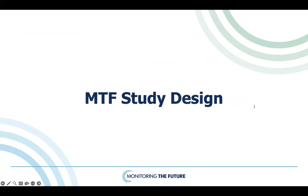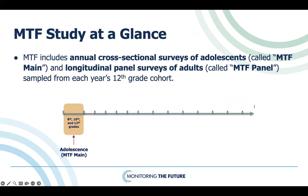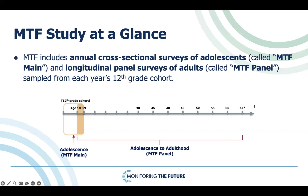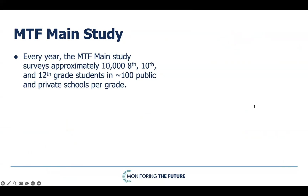Let's look closely at the MTF study design. MTF includes two studies. First, the MTF main study consists of cross-sectional adolescent surveys, which includes 8th, 10th, and 12th grade students. Next, the MTF panel study consists of longitudinal follow-up studies of selected individuals from the 12th grade adolescent surveys, including young adult surveys and middle and older adult surveys. Every year, approximately 10,000 8th, 10th, and 12th grade students are surveyed from approximately 100 schools for each grade.